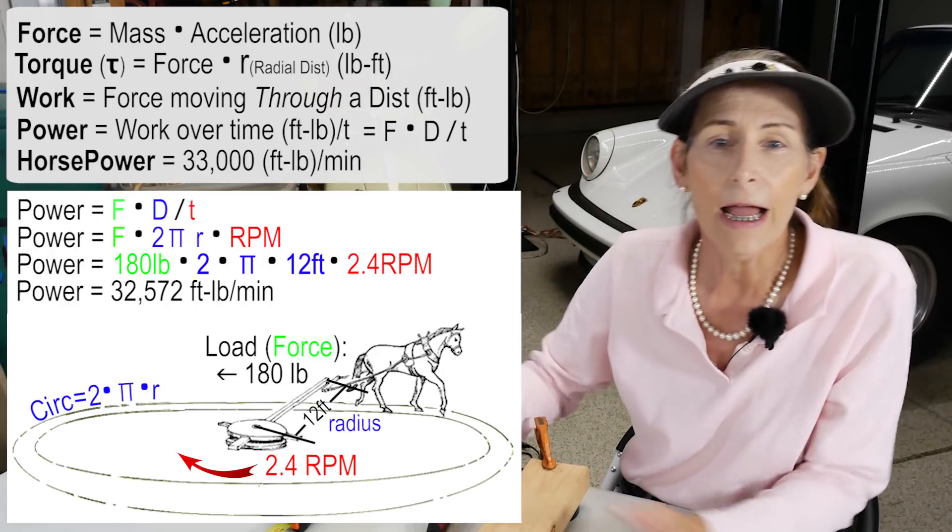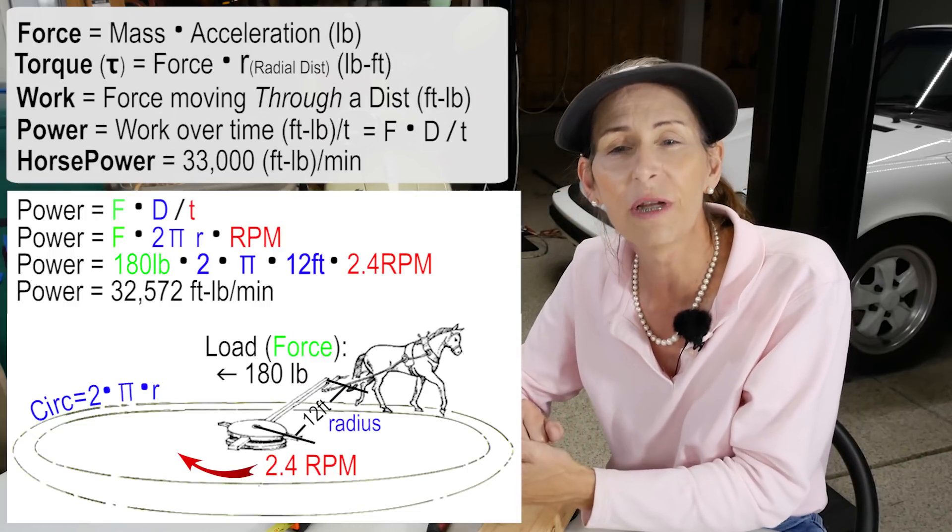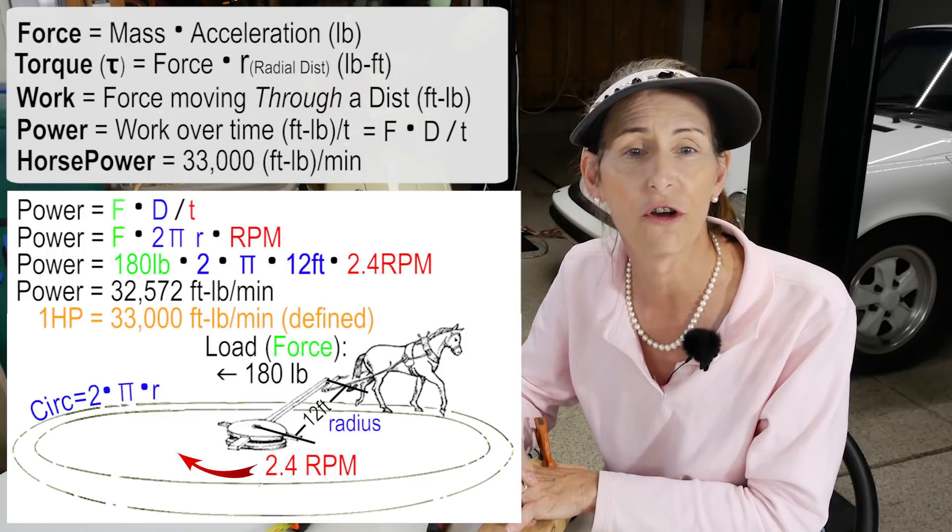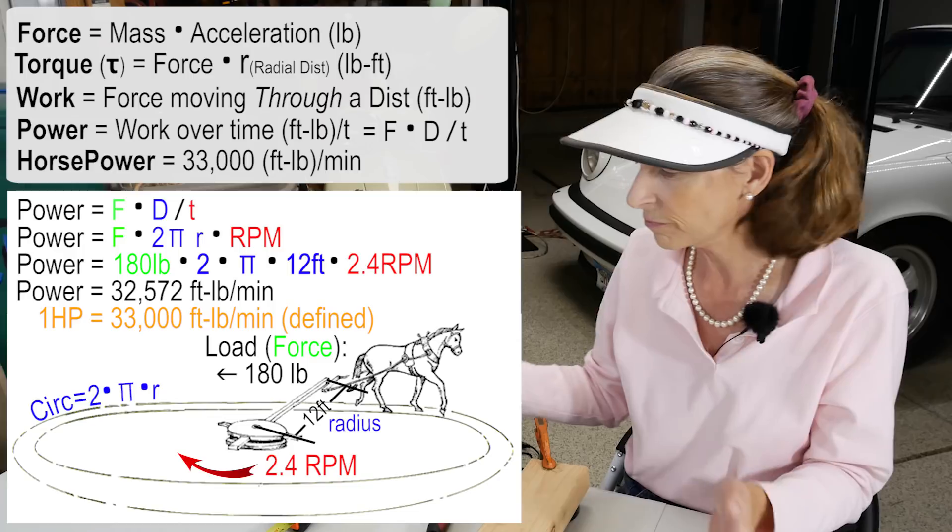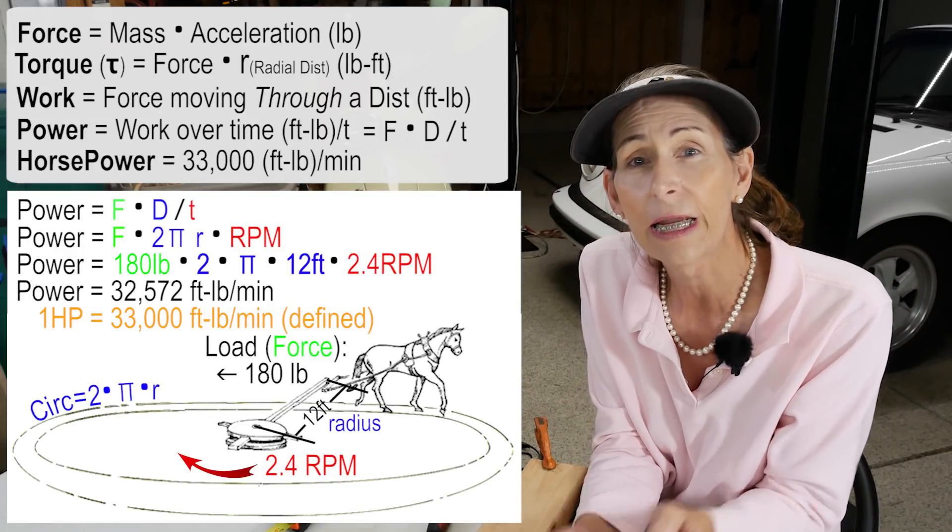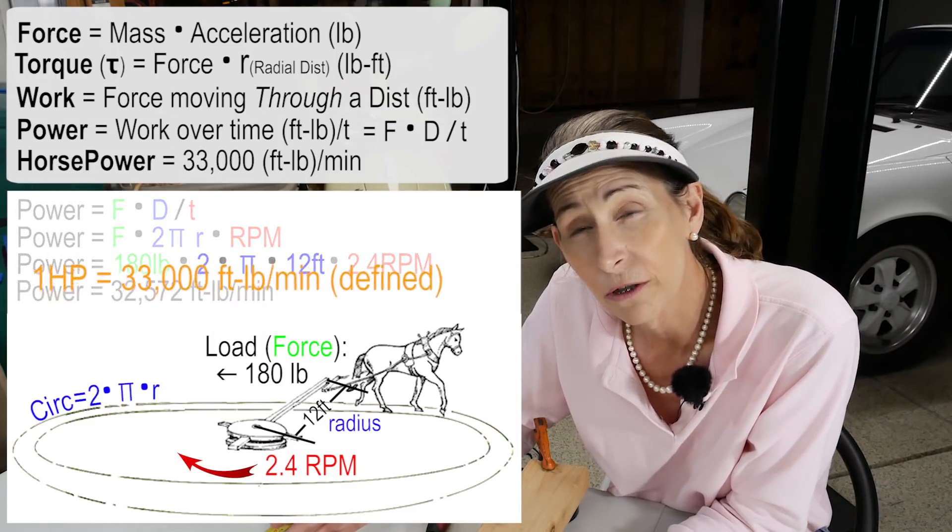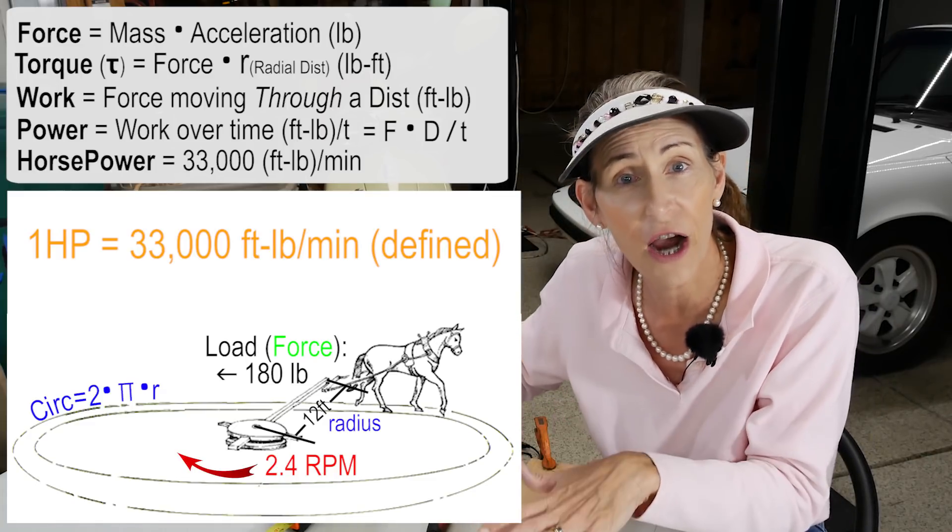So that number was a little bit difficult to work with. So they had to round that up. So they rounded it up to 33,000 foot pounds and that was about the year 1783 or so. So now James had a conversion factor that he could apply that a farmer would understand because he knew exactly what his horses could do and he could put multiple horses on a job.